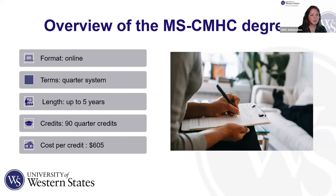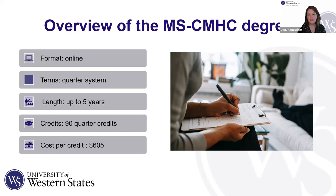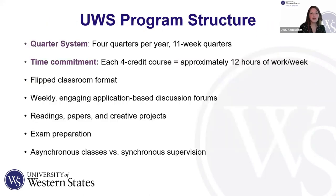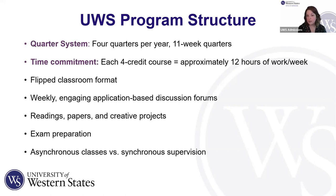The degree format is online on the quarter system — 11 weeks of courses followed by two weeks of break between each term, with four terms per year. Students have up to five years to complete the 90 quarter credits. For time commitment, for every four-credit course, you're looking at approximately 12 hours of work per week — about three hours per credit per week. This is a flipped classroom format, meaning time with professors is spent practicing skills and receiving feedback after reviewing materials at home.